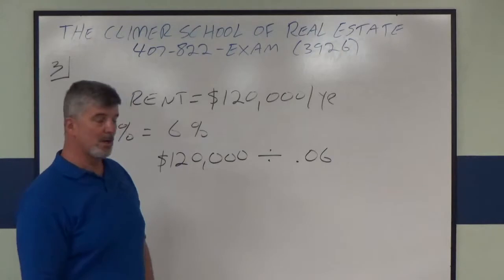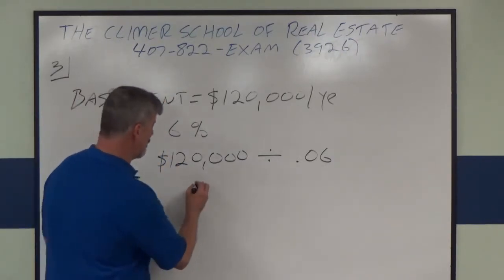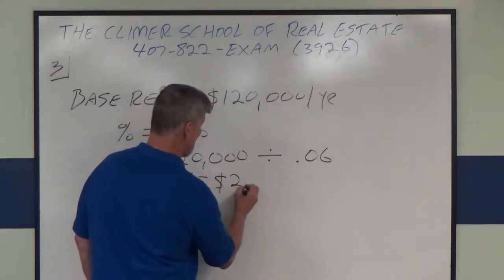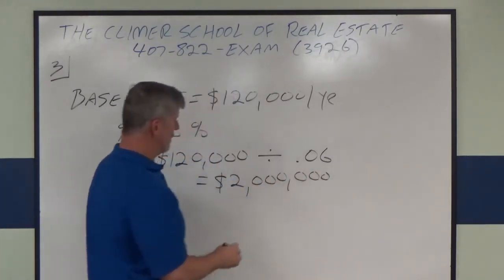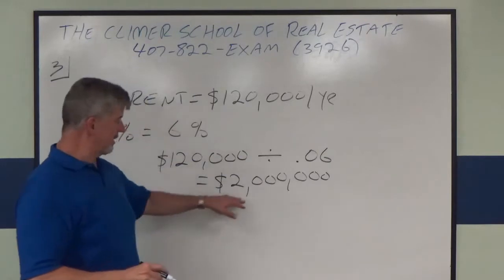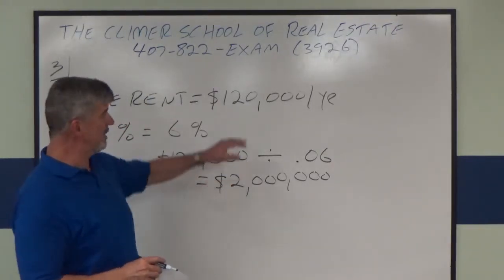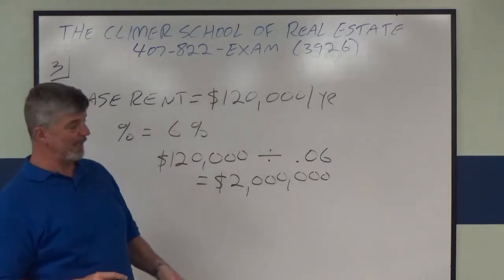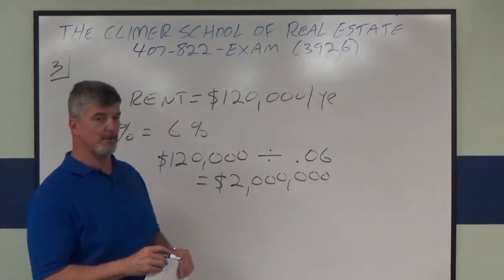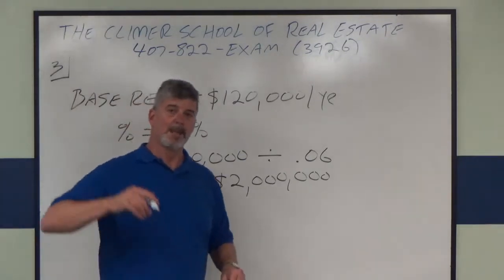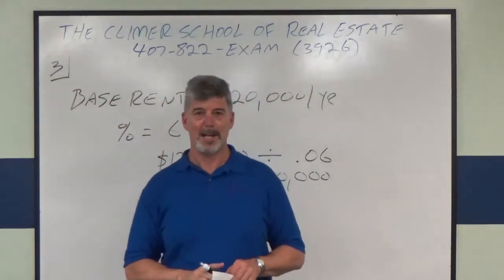If you take $120,000 and divide by 0.06, you get two million dollars. What that means is: as soon as your gross sales go over two million dollars, in addition to the base rent, you're paying the landlord six percent of everything over two million dollars in gross sales. That's how you do the broker version of the percentage lease problem.